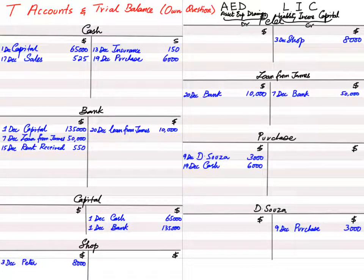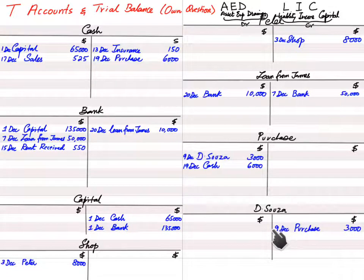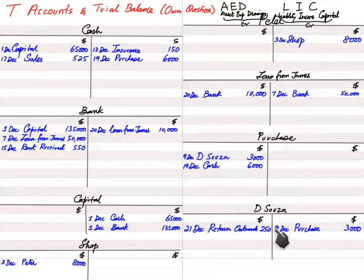Transaction 11: goods worth $250 were defective and returned back to D'Souza. Since D'Souza is our supplier, this is a return outward — also known as purchase return. Our liability to D'Souza decreases, so D'Souza's account is debited. A return outward account is opened and credited. The entry is: debit D'Souza with reference 'return outward,' and credit return outward with reference 'D'Souza.'